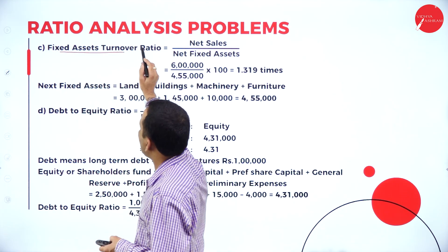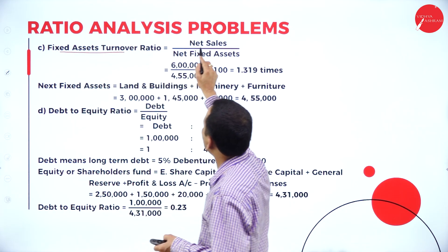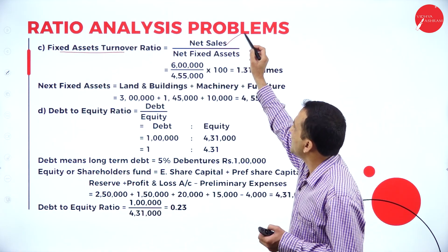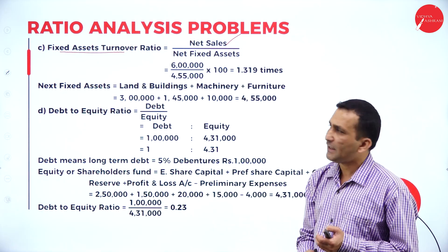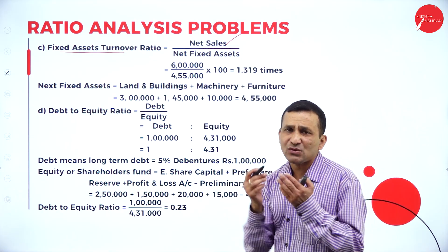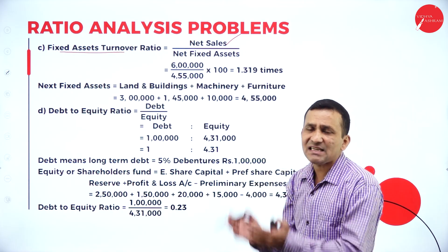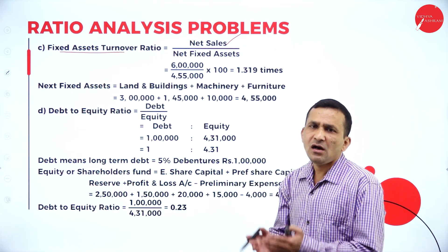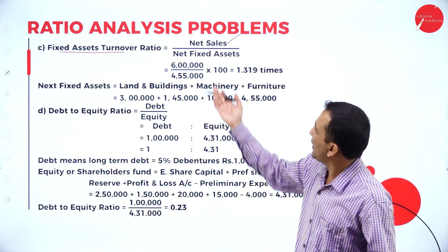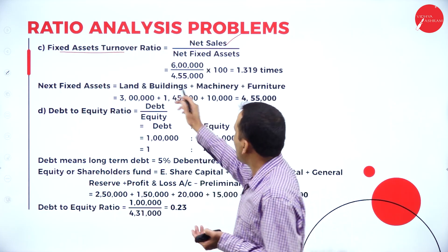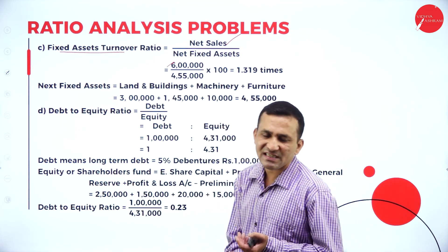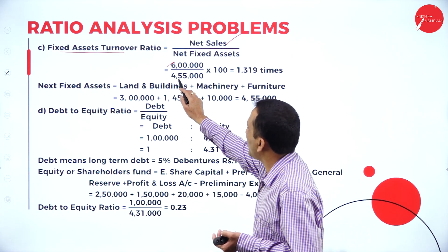Moving to the fixed asset turnover ratio. Turnover always means comparing with net sales divided by net fixed assets. Total sales given in the question is 6 lakh, divided by fixed assets given in the balance sheet.